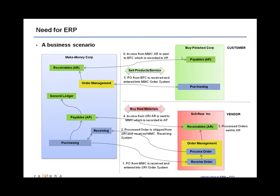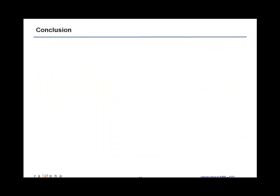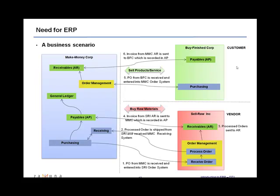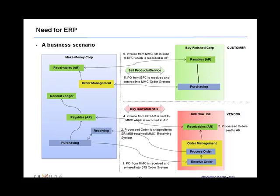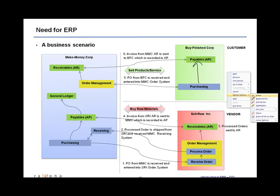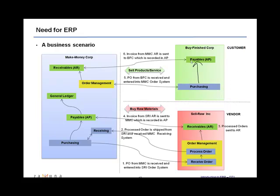The AR invoice from Make Money Corp is sent to the customer, where it becomes an AP invoice on the customer's end. The customer checks the received invoice against their purchasing system to make sure it corresponds to a valid purchase order, and once the payment is made, it gets updated in the AR system.